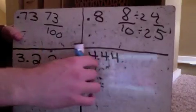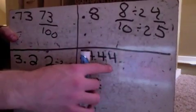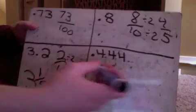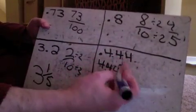The last one is 0.444, which is four hundred and forty-four thousandths.